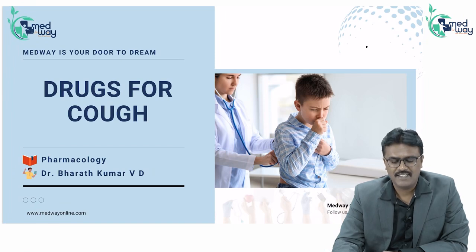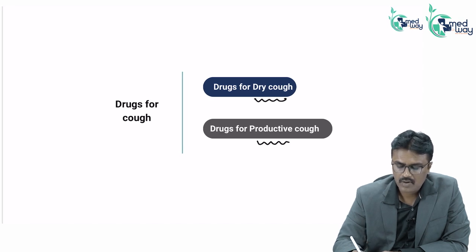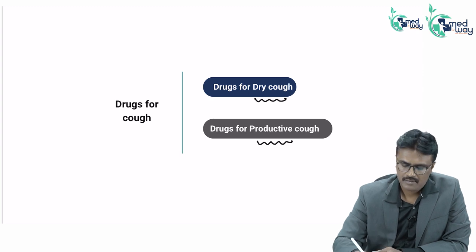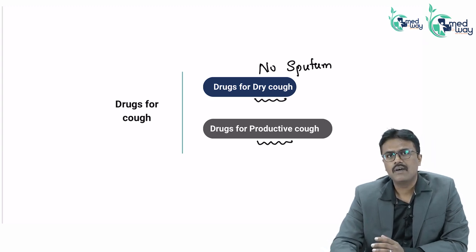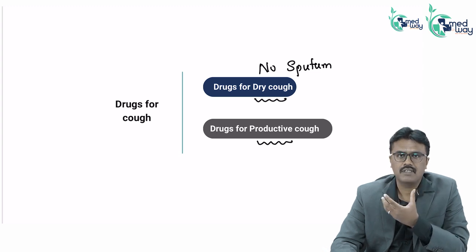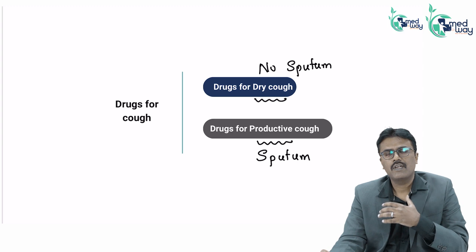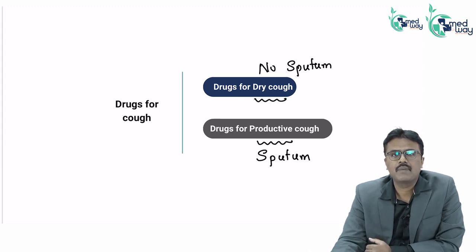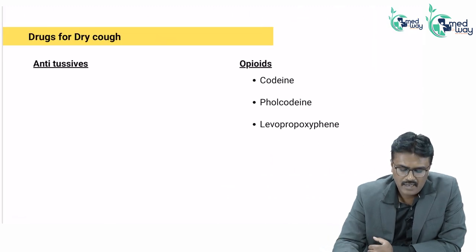In this video we'll be discussing drugs for cough. There are basically two types of cough: dry cough and productive cough. Dry cough has no sputum production and is usually seen in upper respiratory tract infections. Productive cough is a cough where you find sputum, and usually lower respiratory infections like pneumonia and bronchitis produce the mucus that becomes sputum. Let's understand the drugs for dry cough and for productive cough, also called wet cough.